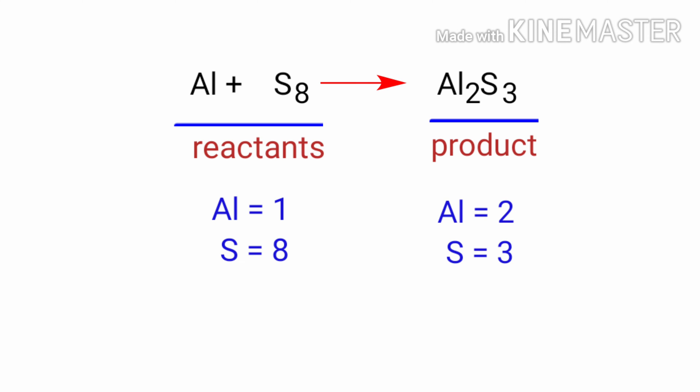To balance the chemical equation, we need to make use of coefficients. A coefficient is a number that we place in front of a chemical formula.